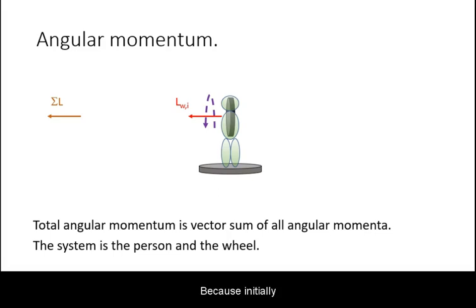Because initially the person is not spinning and hence they don't have an angular momentum, the total angular momentum of the system is identical to that of the initial angular momentum of the wheel.